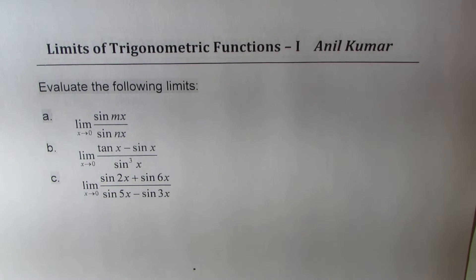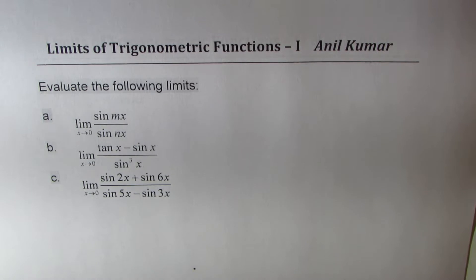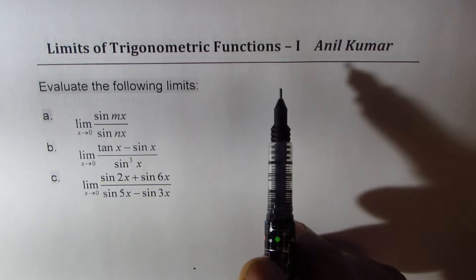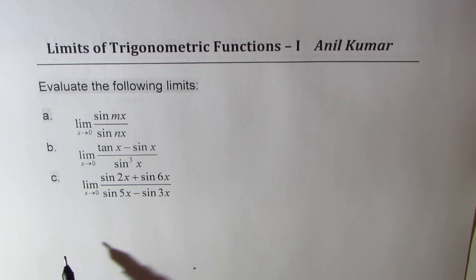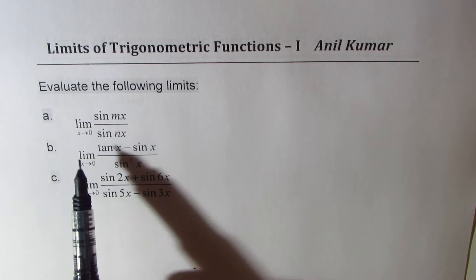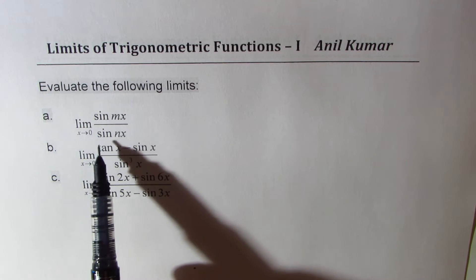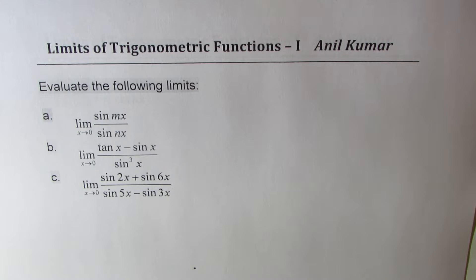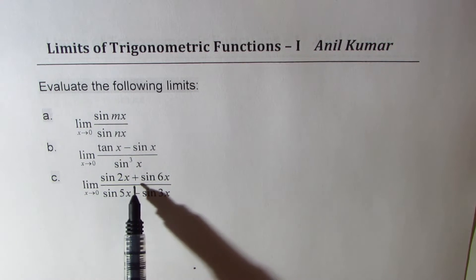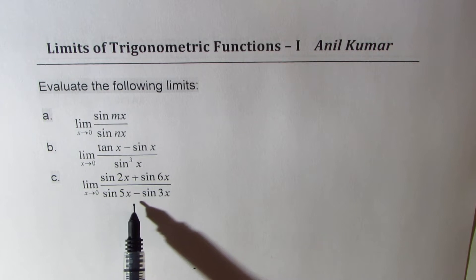I'm Anil Kumar, welcome to my series on limits. We'll discuss limits of trigonometric functions and take a few examples based on complexity, grouped into different levels. We have three examples: find the limit as x approaches 0 for sin(mx) over sin(nx); limit as x approaches 0 for tan(x) minus sin(x) over sin³(x); and limit as x approaches 0 for sin(2x) plus sin(6x) divided by sin(5x) minus sin(3x).